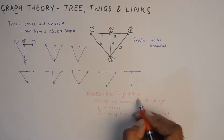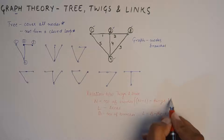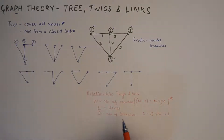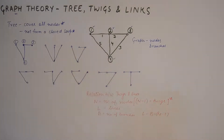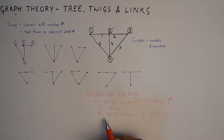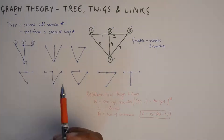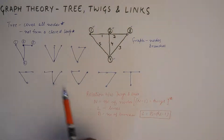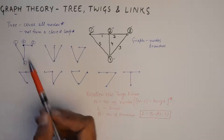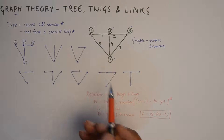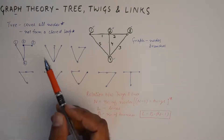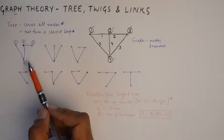This is very important. If the number of nodes is n, then twigs will be n minus one. And if the number of links are l and the number of branches are b, then there is a relationship between l, b, and n. When you start finding out the trees from the graph, you will automatically see that twigs are formed and you will count them — there will be one less than the number of nodes. The number of nodes here are four, so the twigs will be three.